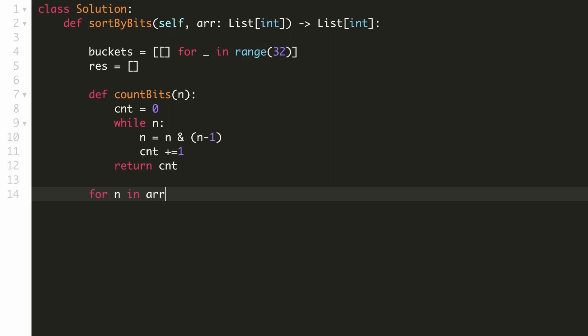Now we'll go through all the numbers in our array. And for each number, we'll count the number of ones set in it. And once we have found the number of ones, we'll add it to the respective bucket list.